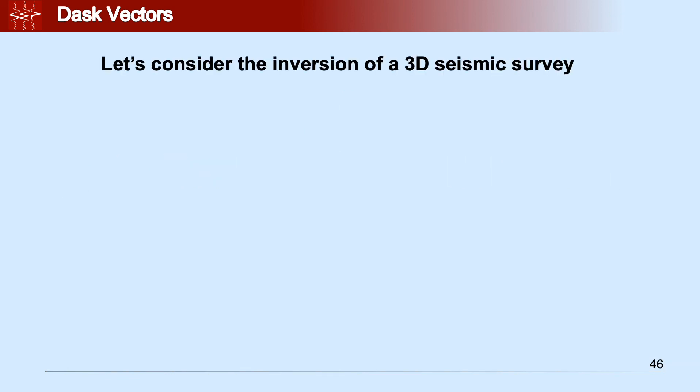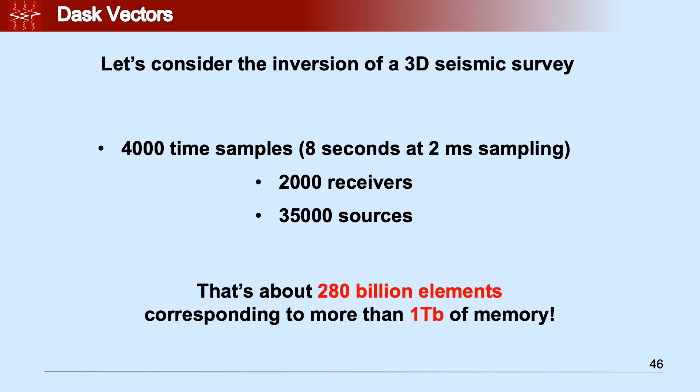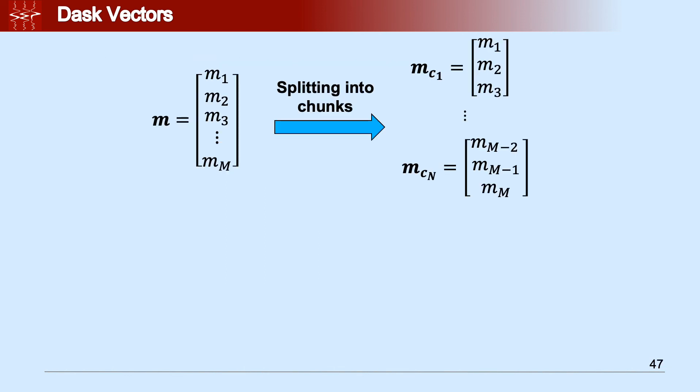For instance, let's consider the inversion of a 3D real seismic survey. We could have 4,000 time samples, corresponding to 8 seconds at 2 millisecond sampling, and we have 2,000 receivers and 35,000 sources. This corresponds to roughly 280 billion elements or simply more than 1 terabyte of memory. Obviously, we cannot store this huge vector onto a single machine, so we have to spread it onto different workers.